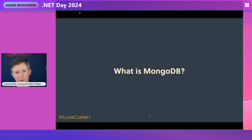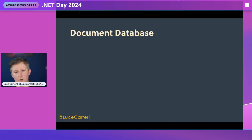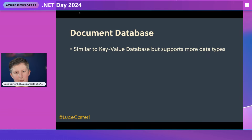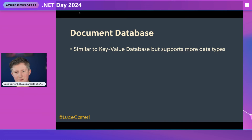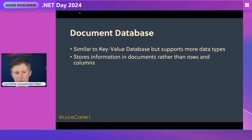What is MongoDB? At its core, the main part of MongoDB is a document database. It's similar to a key-value database, but it supports more data types like embedded documents — so essentially objects, dates, different types of numbers, and many more. It stores information in collections of documents rather than tables with rows and columns. A document is kind of a row, and a column would be a field in that document.